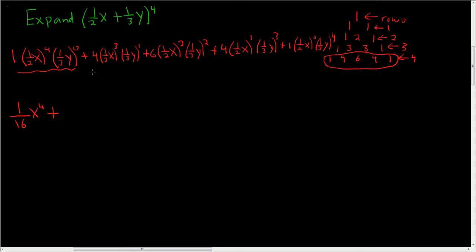Plus, here we're going to get a 4th. We're going to get a 1 8th. And we're going to get a 1 3rd. So that's 1 half. 1 half times 1 6th. So 1 6th. x cubed y.